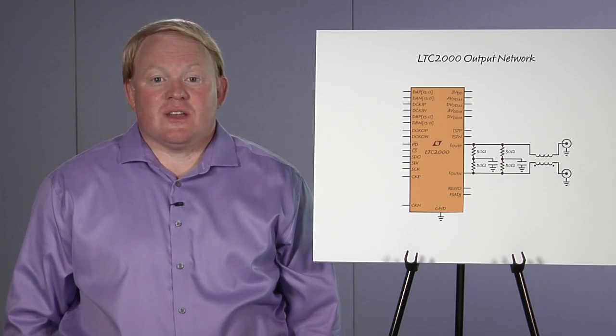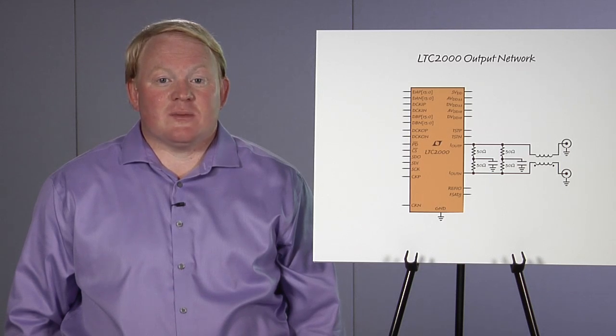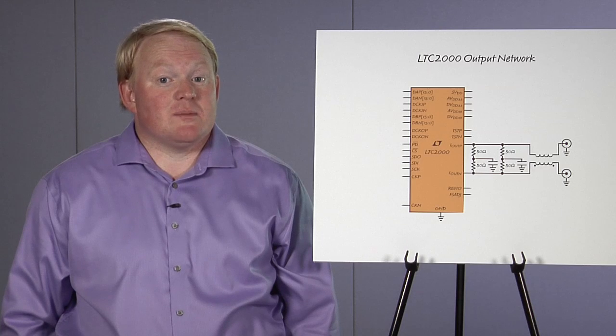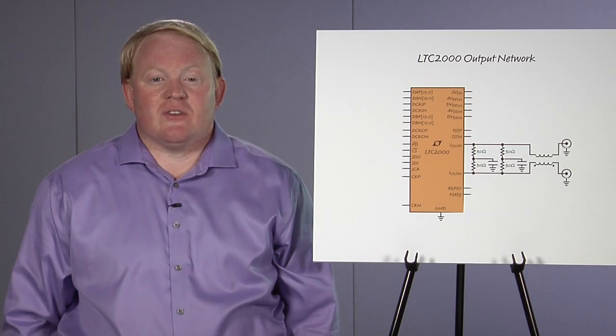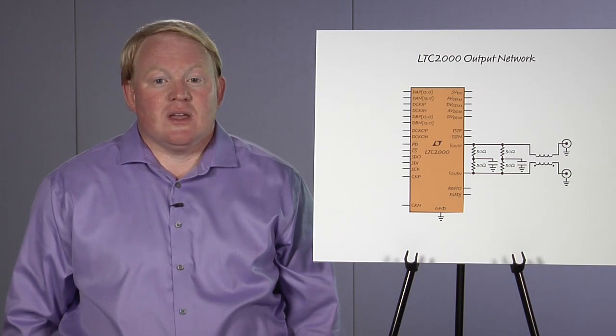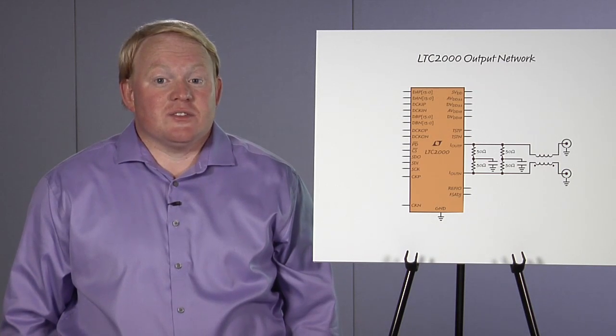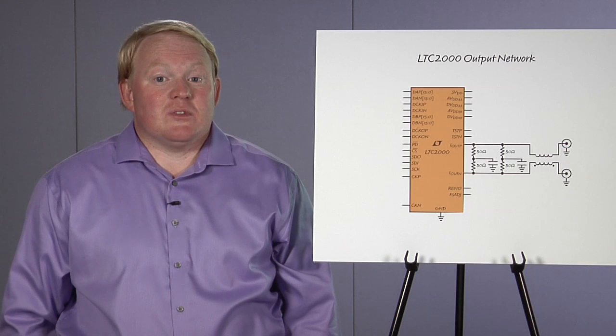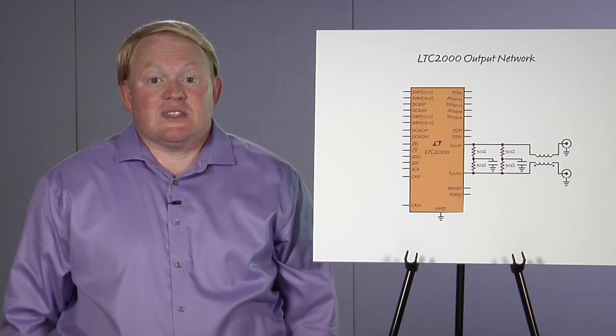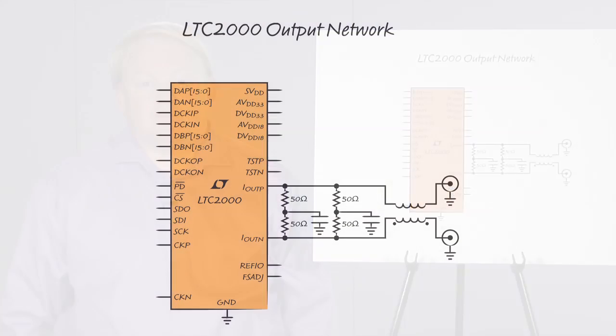As a default, the LTC2000 has 40 milliamps of output current, but this can be adjusted from 10 milliamps up to 60 milliamps by simply changing the value of an external resistor tied between FS adjust and ground. Internal registers can also change the output current between a minus 10.8 and 14.3 range in steps of 0.4%.